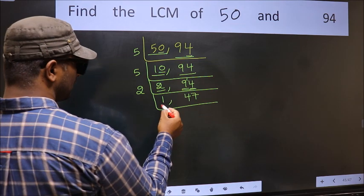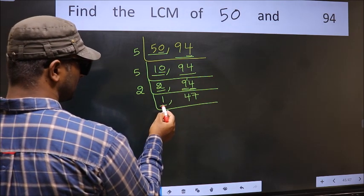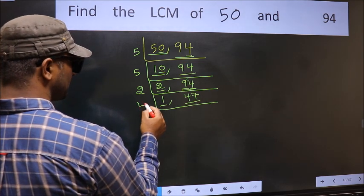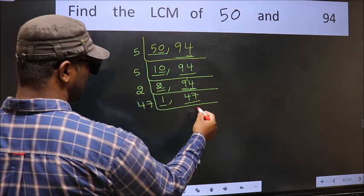Now we got 1 here. So focus on the other number 47. 47 is a prime number so 47×1 is 47.